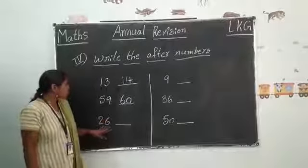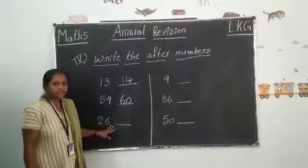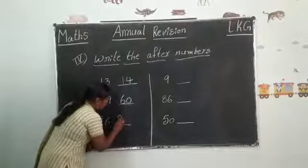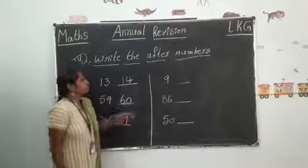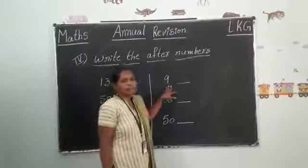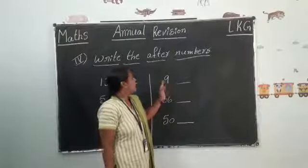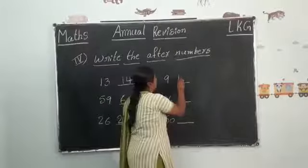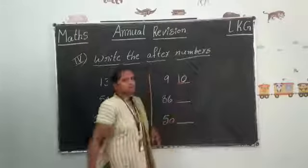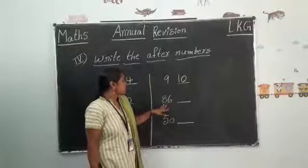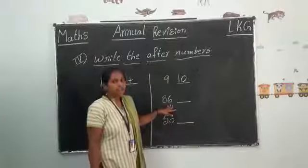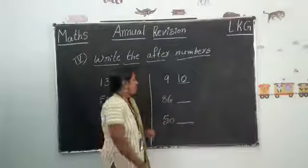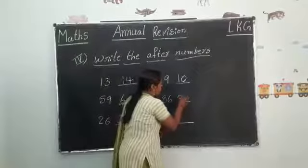Now next. Two six, twenty six. Now next. Two seven, twenty seven. Now what is this number? Nine. After nine. Yes. Very good. One zero, ten. Now next. Eight six, eighty six. After eighty six, eighty seven. Eight seven.